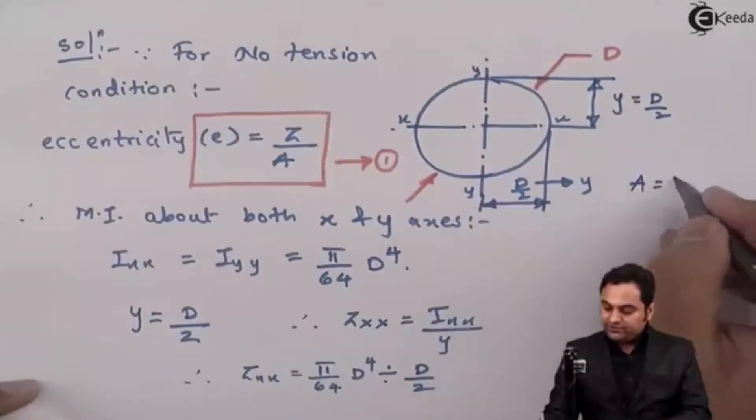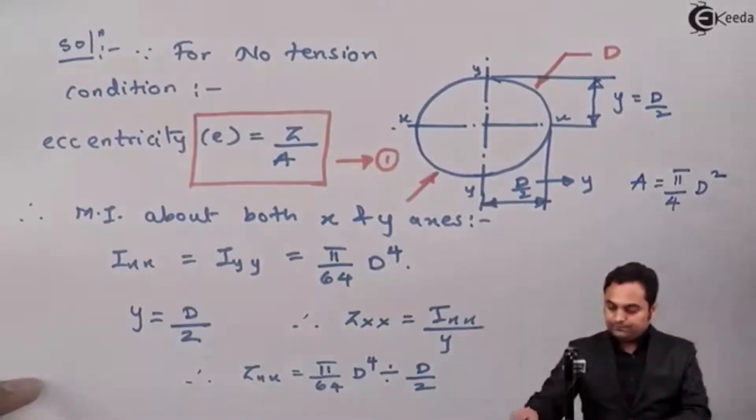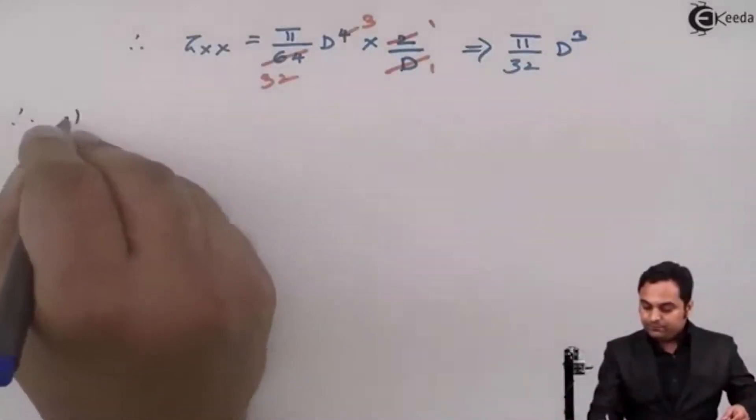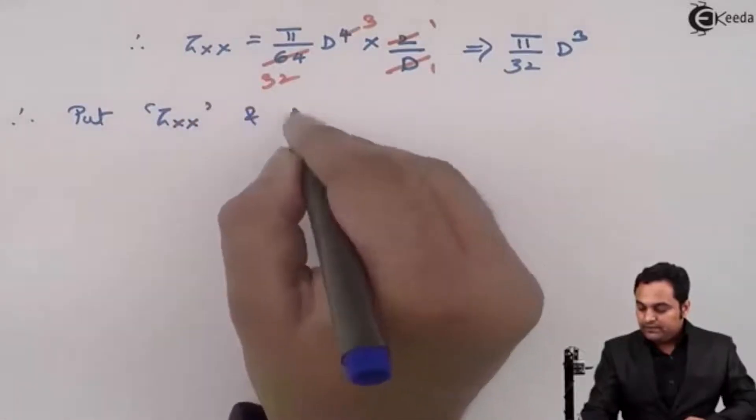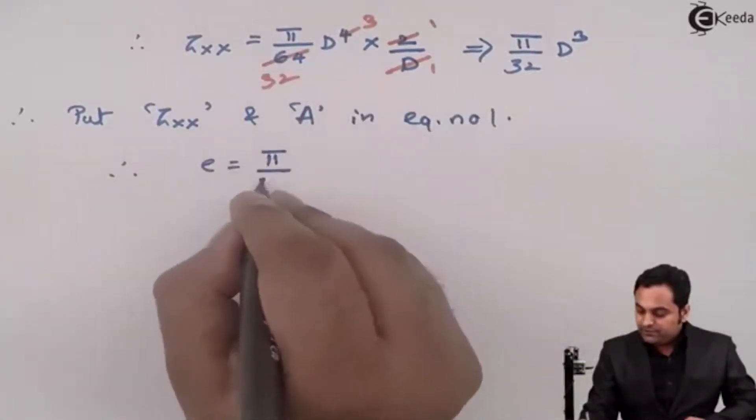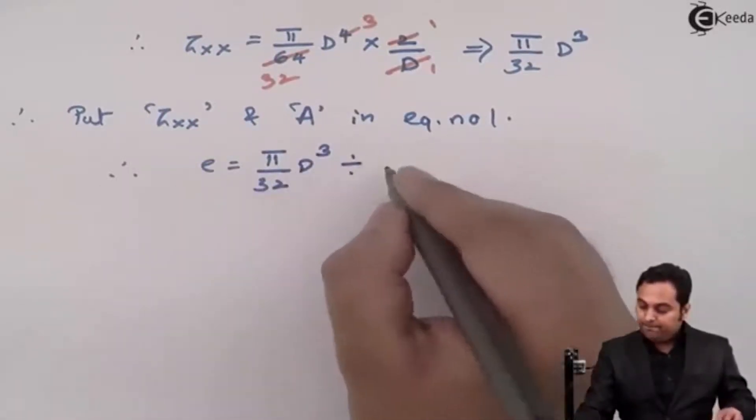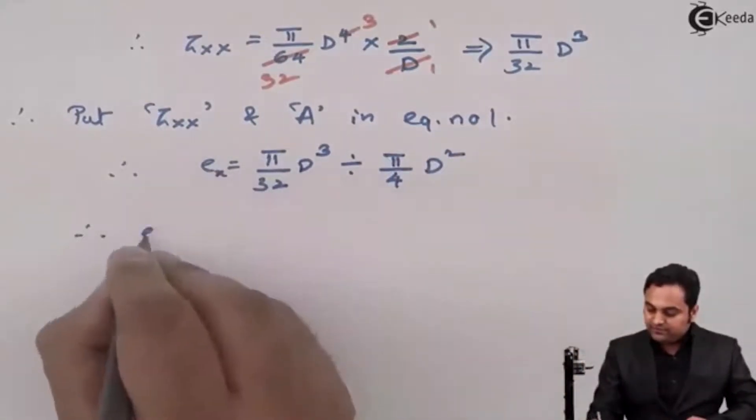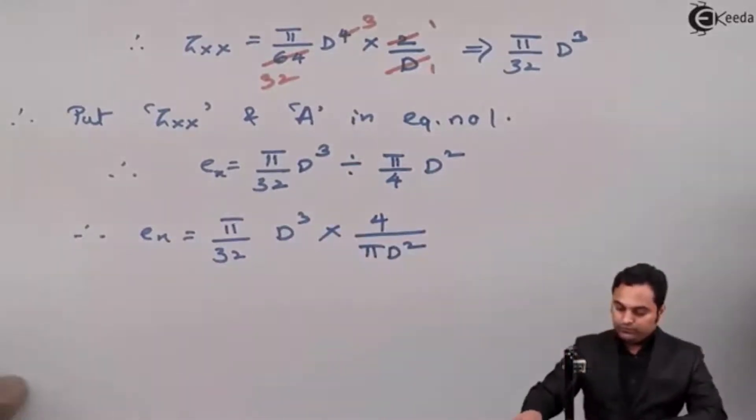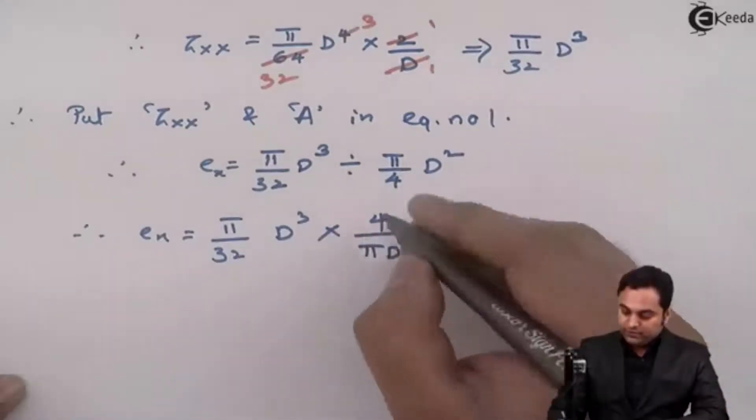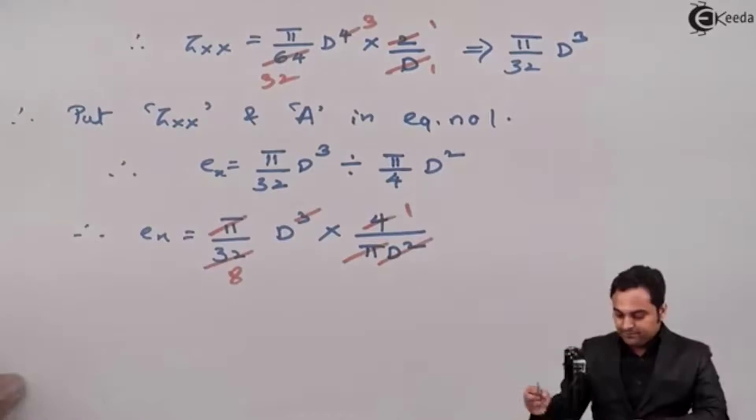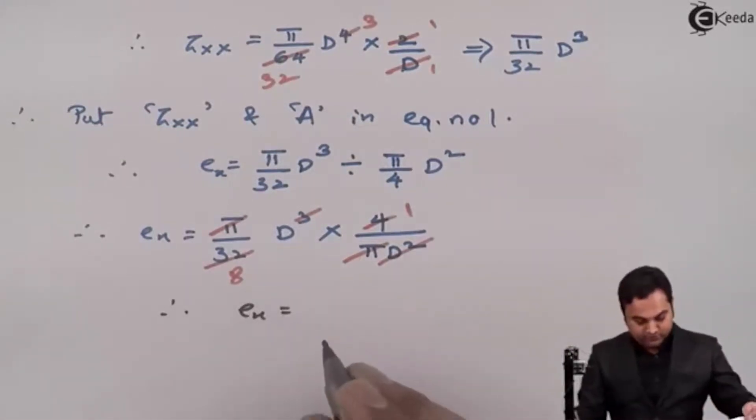Now once we know ZXX and the area for the circular section is π by 4 D square, we can put ZXX and area in equation number 1. So we have eccentricity E is equal to ZXX, π by 32 D cube divided by area which is π by 4 D square. So this is eccentricity with respect to X. So π by 32 D cube multiplied by 4 upon π D square. 4 and 32 will get cancelled, D square gets cancelled, π and π gets cancelled. So therefore eccentricity with respect to X is equal to D by 8.